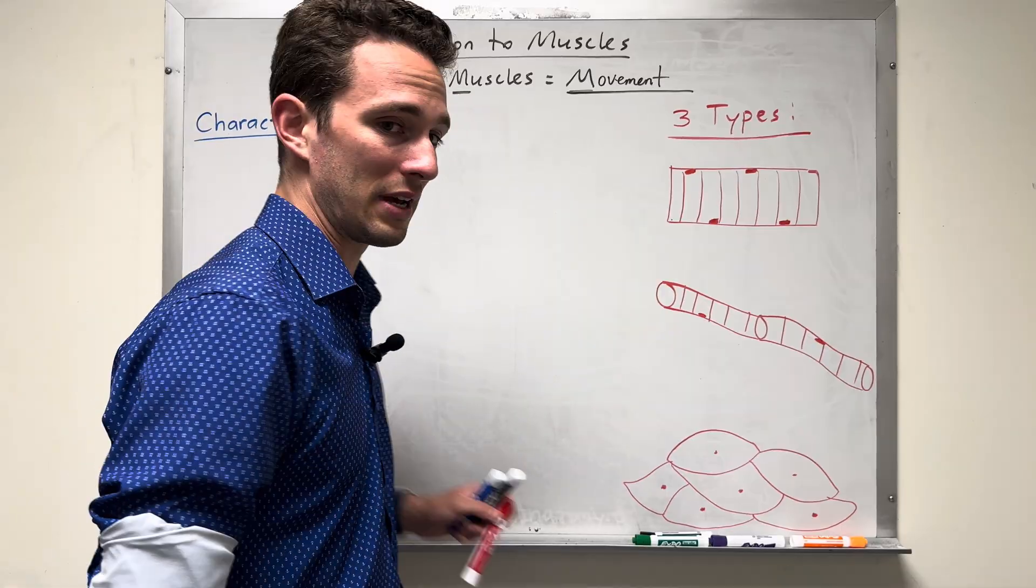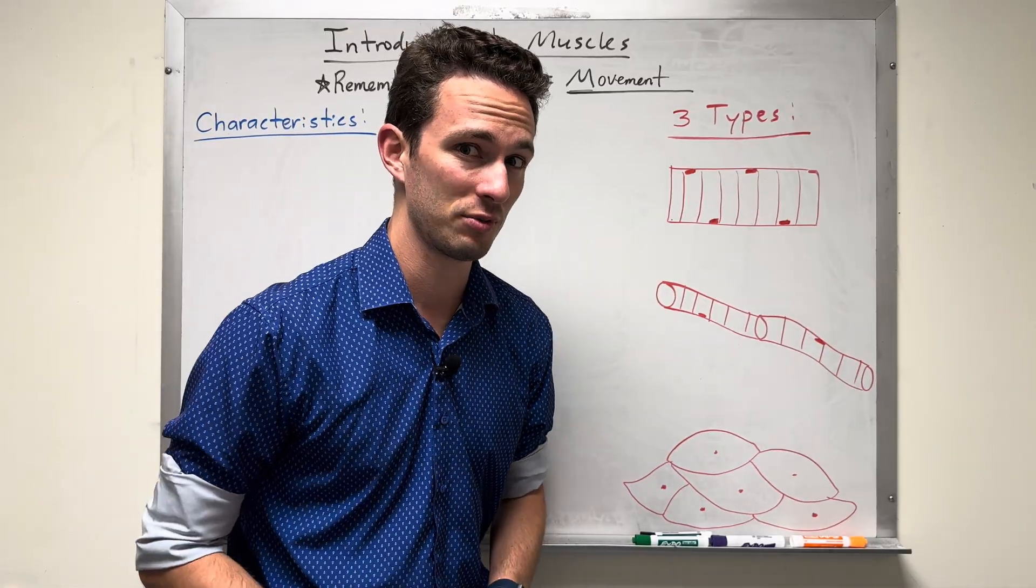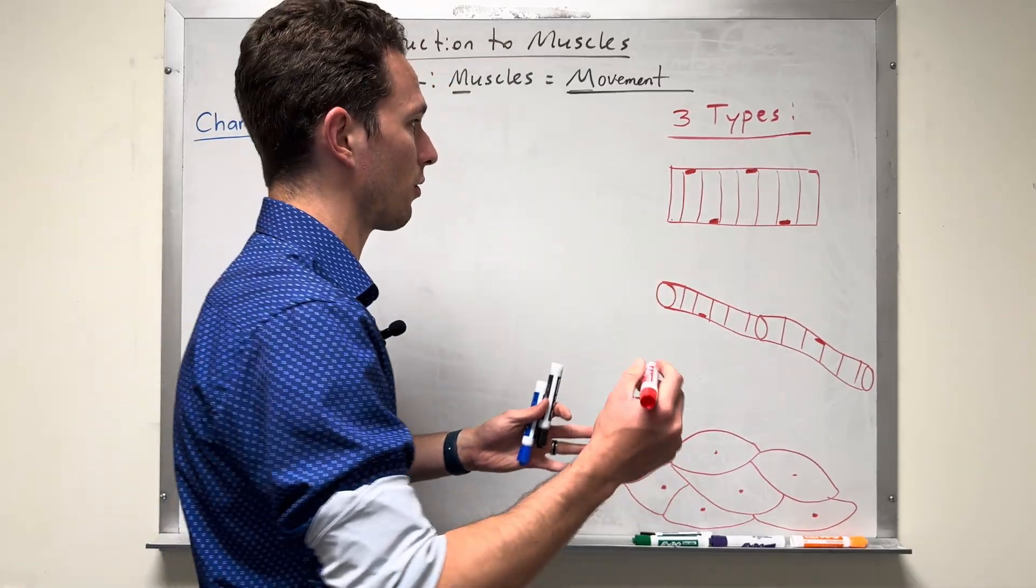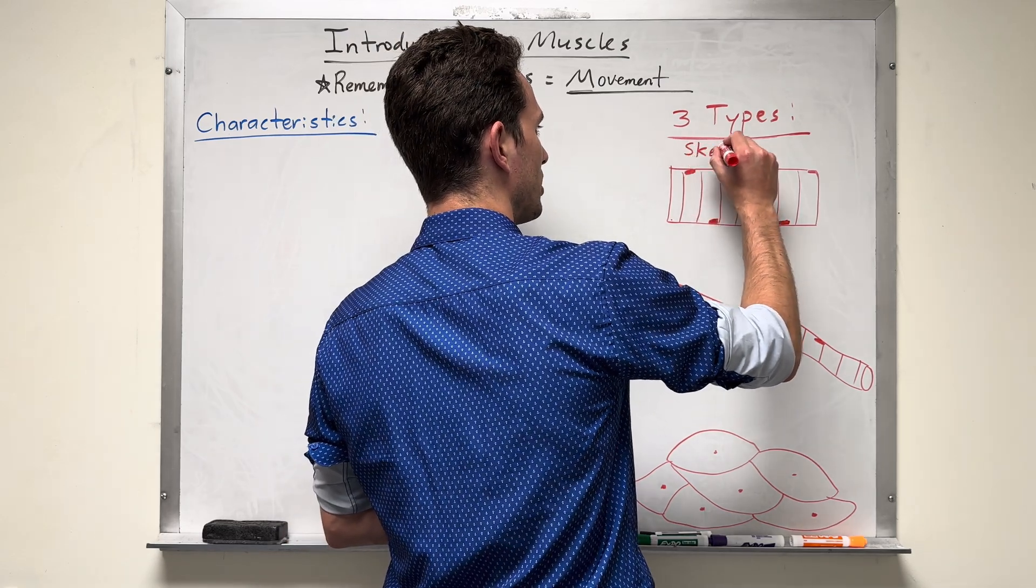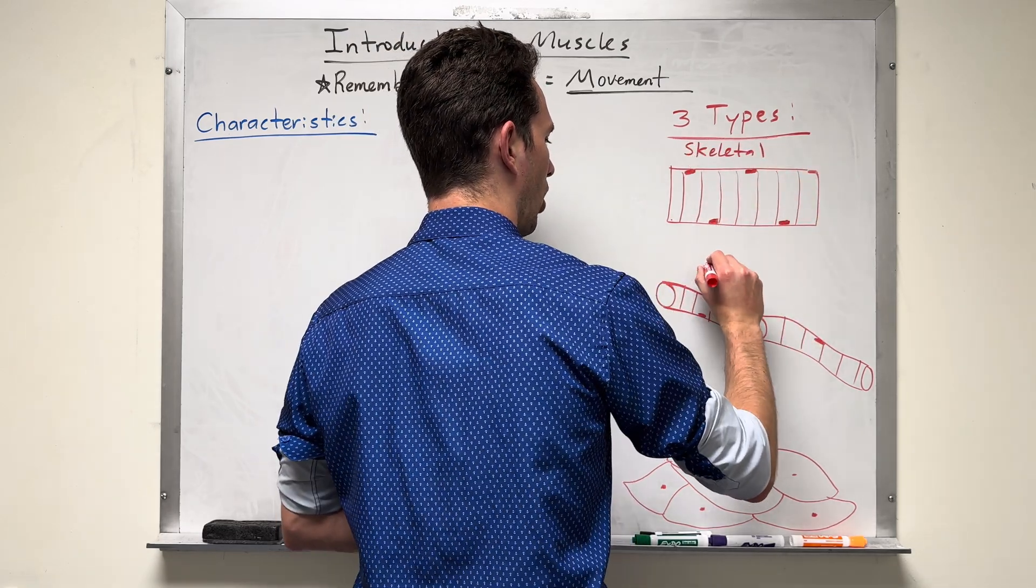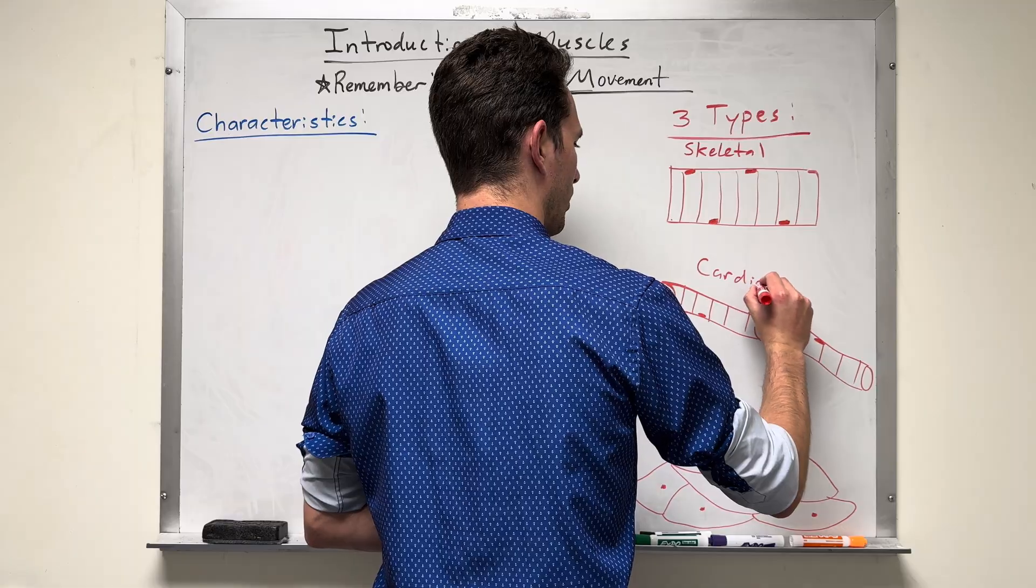Not all muscular tissue is made the same. There are three different types of muscular tissue we should have learned already. The first type is called skeletal muscle tissue, the second cardiac, and then the third smooth.